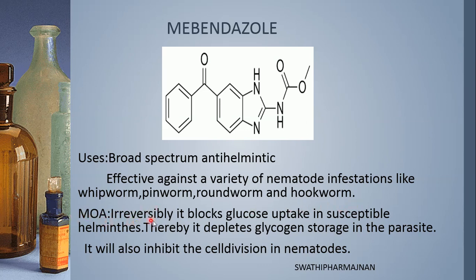The mechanism of action of mebendazole is that it irreversibly blocks glucose uptake in susceptible helminthes. Glucose is taken up by the parasitic worm to produce energy for movement in the intestinal wall — that gets blocked by mebendazole. Thereby it depletes glycogen storage present in the parasite. Once the glycogen storage is completely utilized, the parasite gets affected and stops. It also inhibits cell division in nematodes.